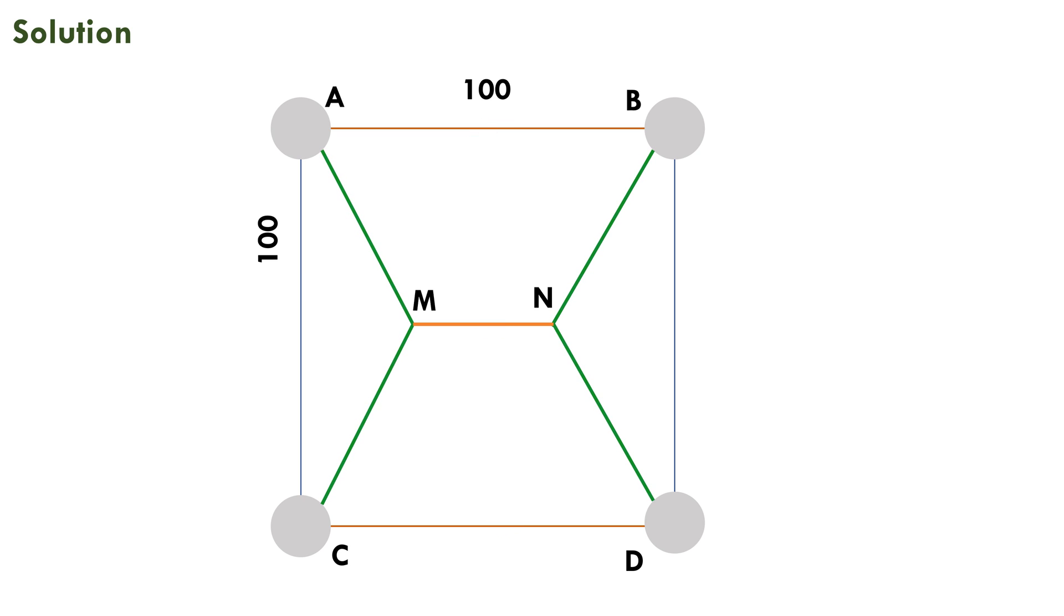Sides AM, BN, CM, DN are equal and angles BAM, ABN, MCD and NDC are equal. Let's say theta.